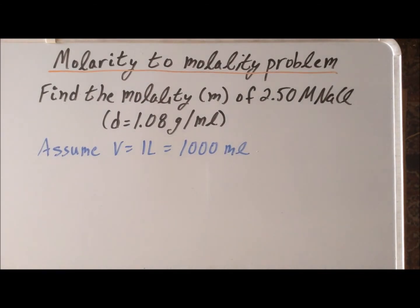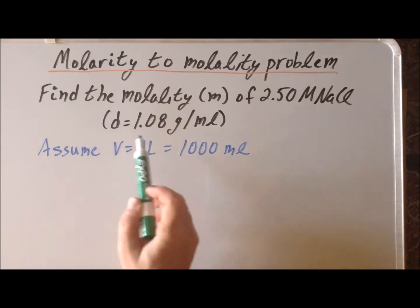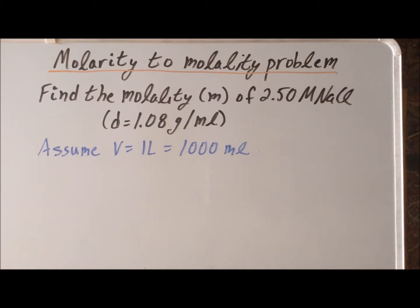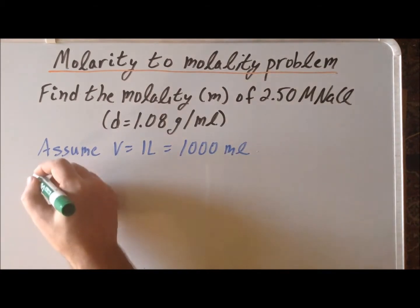Next, we are going to calculate the mass of the solution knowing the fact that we know its volume and we know its density. If we multiply the volume times the density, it's going to give us the total mass.